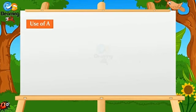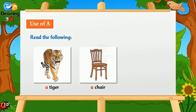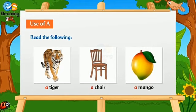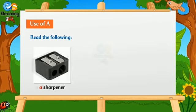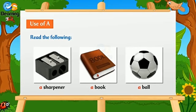Use of A. Read the following: a tiger, a chair, a mango, a sharpener, a book, a ball.